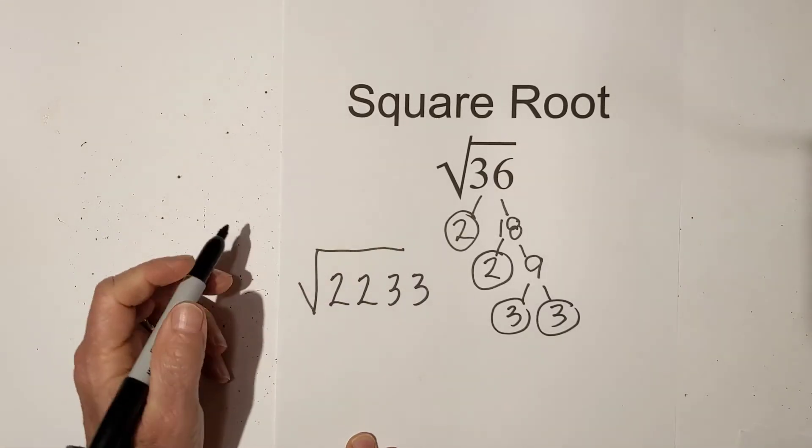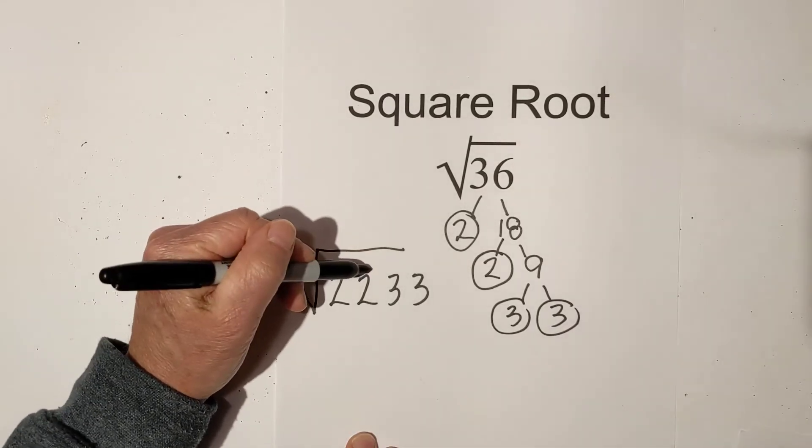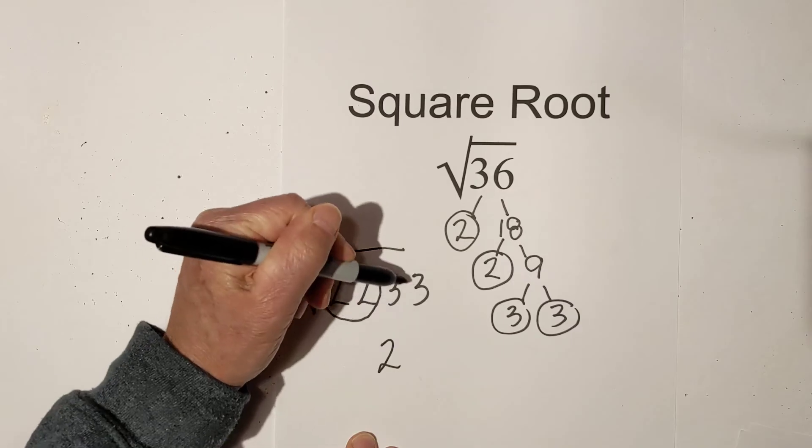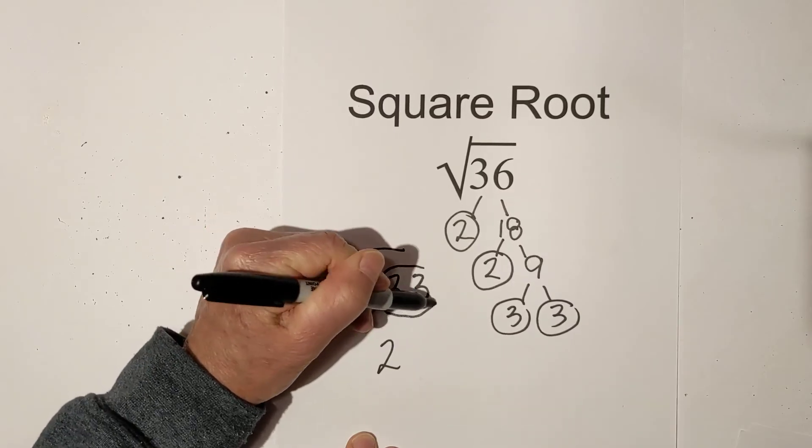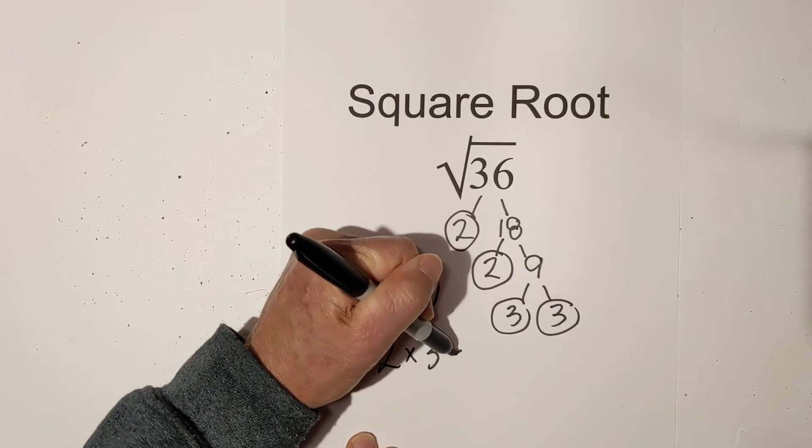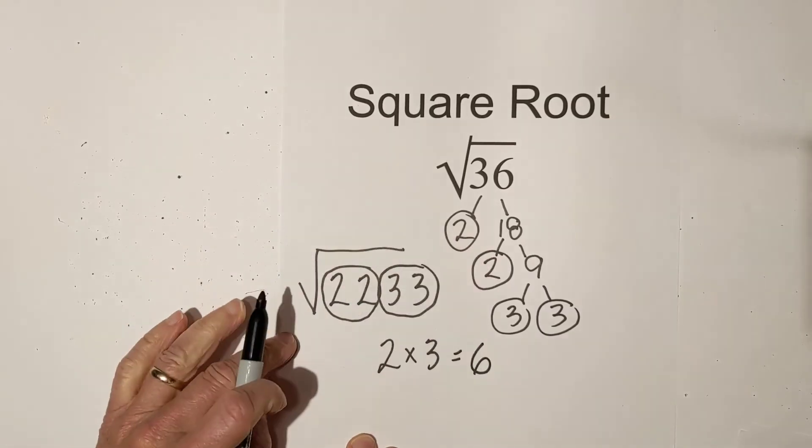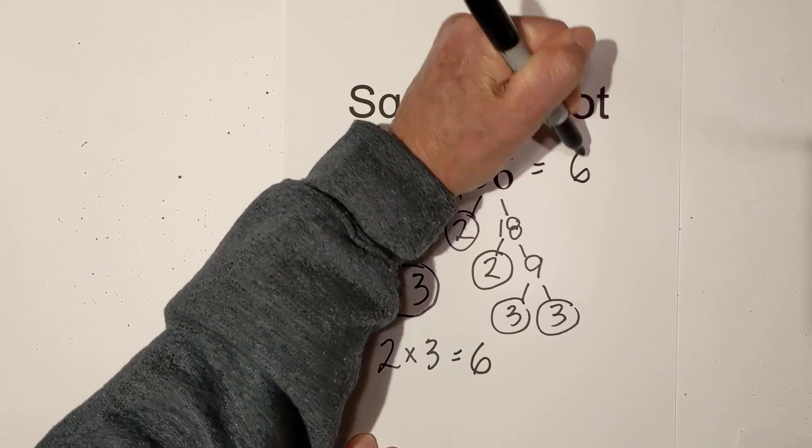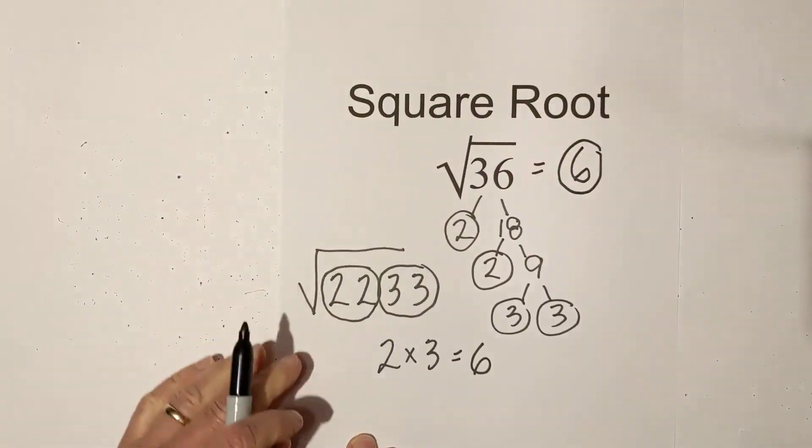Then what you do is bring the pairs out from under the sign. So there's one set of two, so I'll bring out a two, and here is one set of three. So it's two times three which equals six. So the square root of 36 is equal to six.